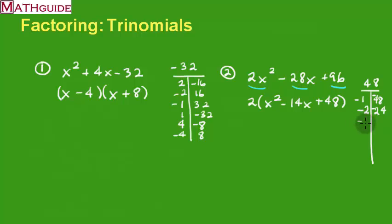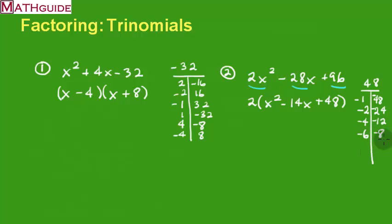Let's try negative 4 and negative 12 — they add to negative 16. I'm really close but it's still not working. Let's try negative 6 and negative 8 — they multiply to 48 and add up to negative 14. Ding ding ding! That is the answer.